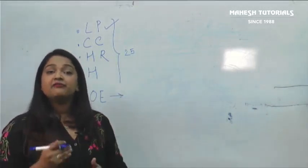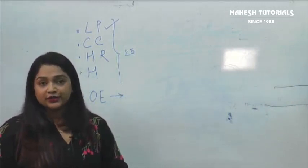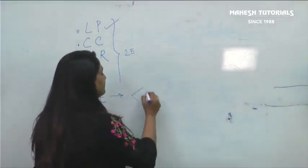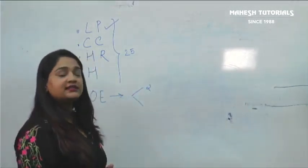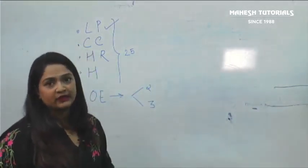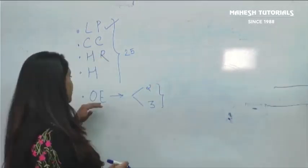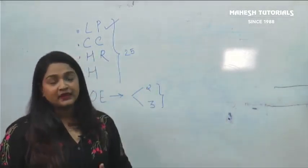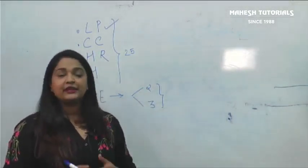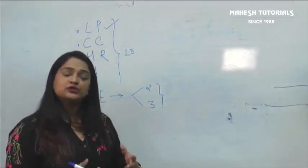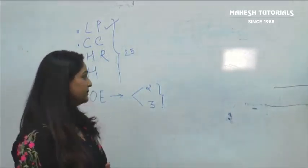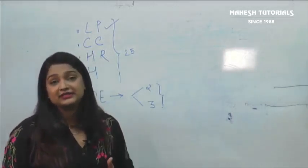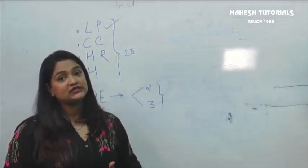For the Our Environment chapter — the last unit — two chapters have been omitted for theory; only one chapter remains. From the sample paper, the five marks are typically divided as two marks in very short answer type and three marks in short answer type. Expected question types include: food chain and food web, energy transfer between trophic levels (e.g., if one trophic level has 1000 joules, what energy does the next level receive), ozone layer formation and depletion, and what is an ecosystem with examples.